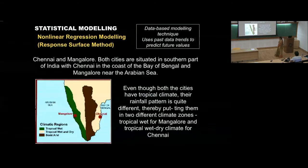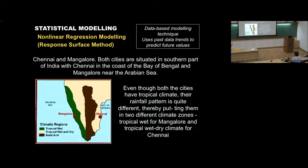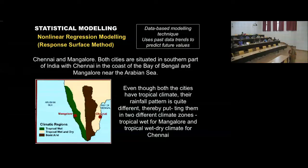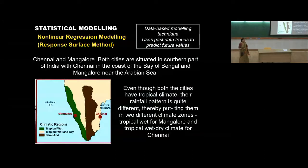Since this is a statistical model, you are going to use external climatic variables. Even though both cities are in the tropical region, rainfall patterns are quite different — so you can put them in two different climate zones and study them separately.